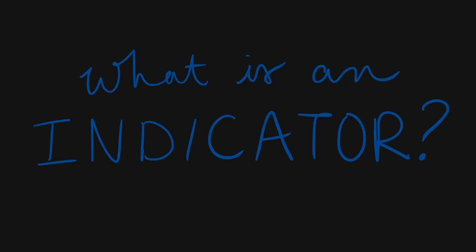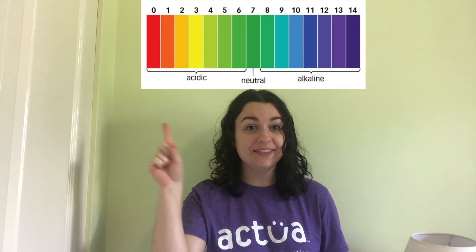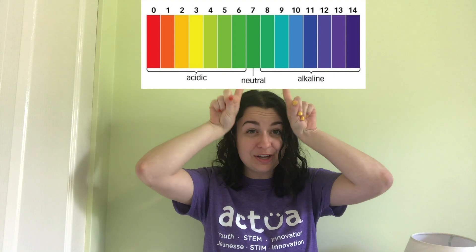In order to test whether a solution is acidic or basic, we need something called an indicator. An indicator is something that we use to determine whether a substance is acidic, neutral, or basic. The indicator tells us where the substance falls on a pH scale, which is how scientists classify acidity. The pH scale looks something like this: acids will be on the left, neutrals will be in the middle, and bases will be on the far right.